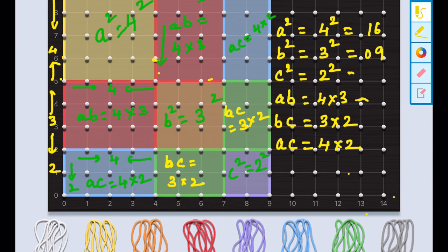That is twice ac. ab I am writing the values. How many squares are there? We have 16, 9, 4. Here we have twice ab. So 12×2, that is 24. Twice bc means 2×6. And twice ac means we have 16. So if you add all these squares, we are getting 81.